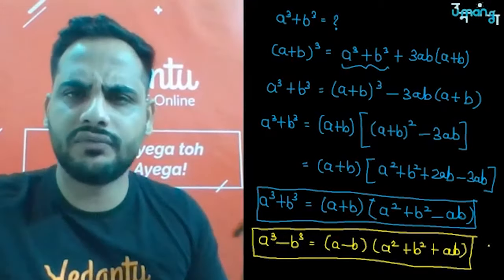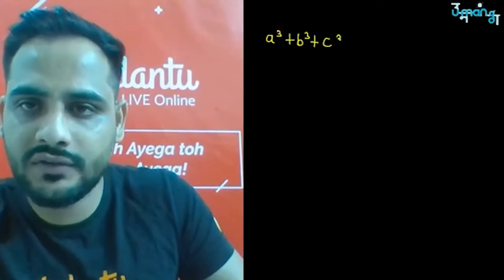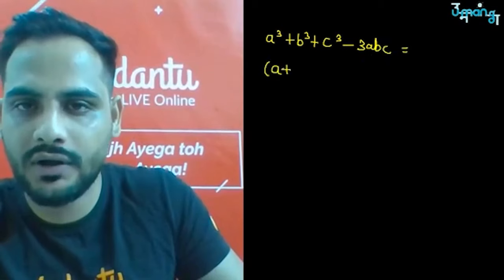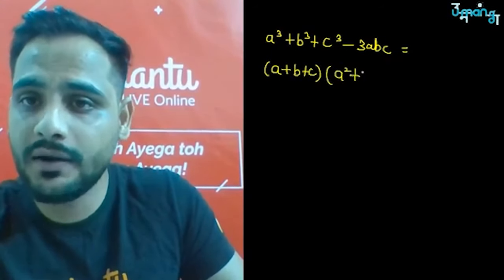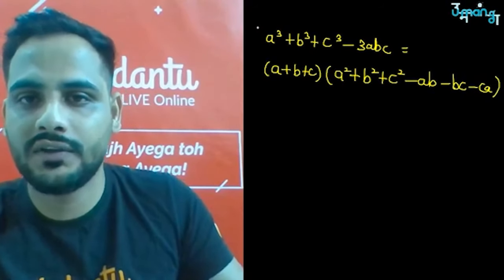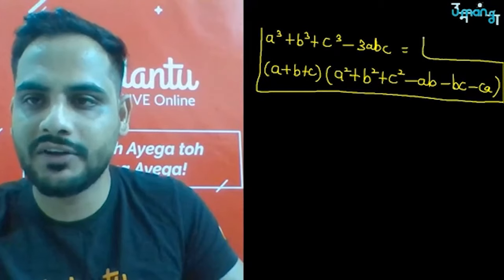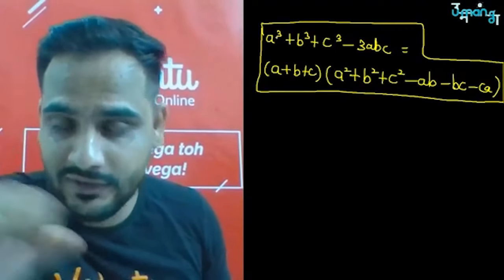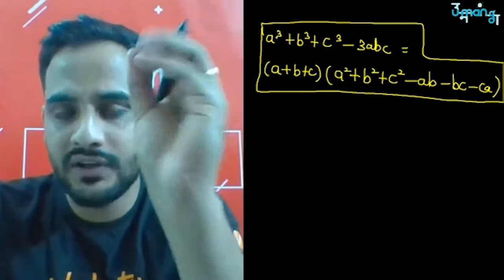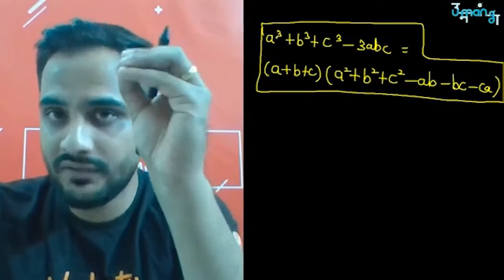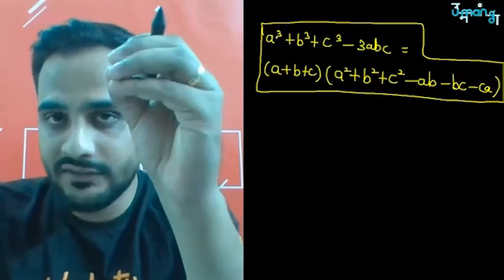Now the most important identity: a³+b³+c³-3abc = (a+b+c)(a²+b²+c²-ab-bc-ca). This is the identity you must remember. A very important application comes from this: what happens if the RHS equals zero?